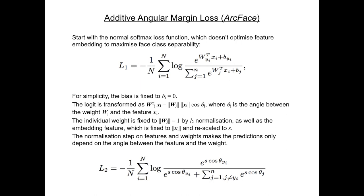The L2 normalized individual weight is set to equal 1, and the L2 normalized embedding feature is rescaled to S. The learned embedding features are thus distributed on the hypersphere with a radius of S. These normalizations allow the predictions to only depend on the angle between the feature and the weight.